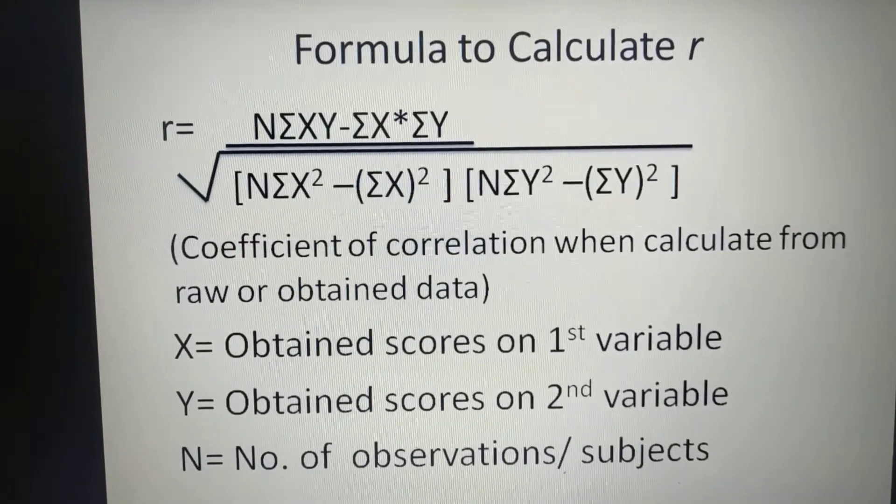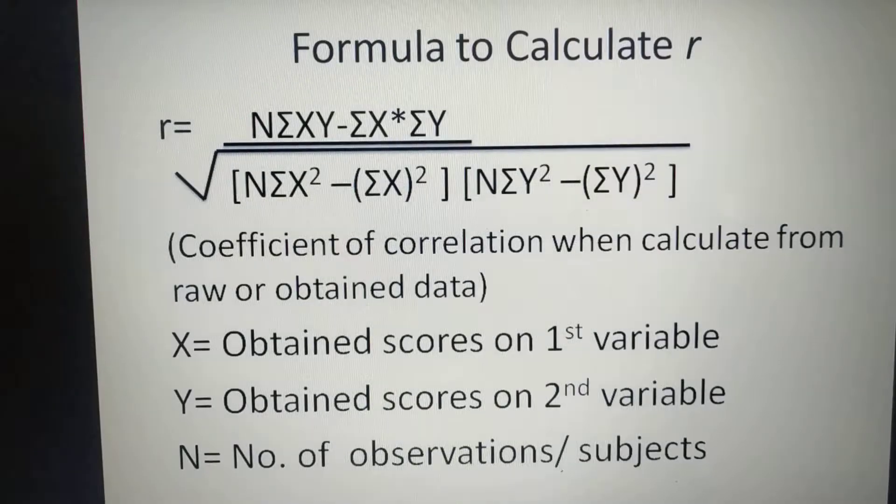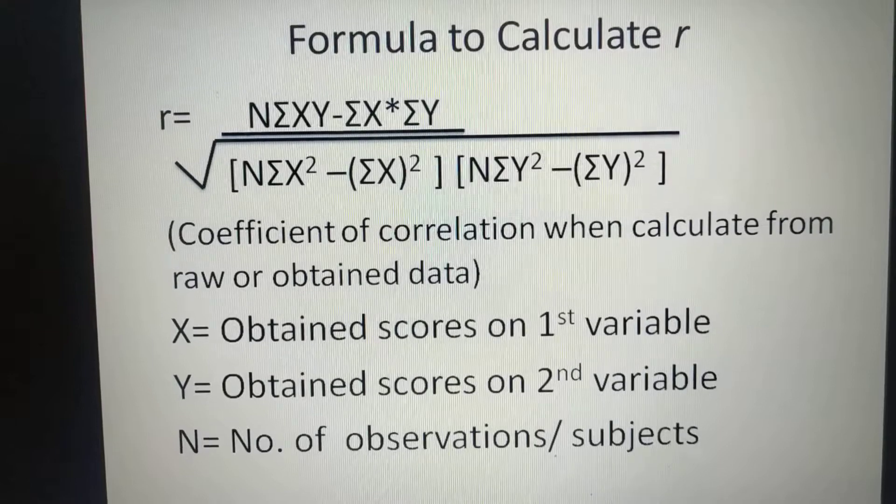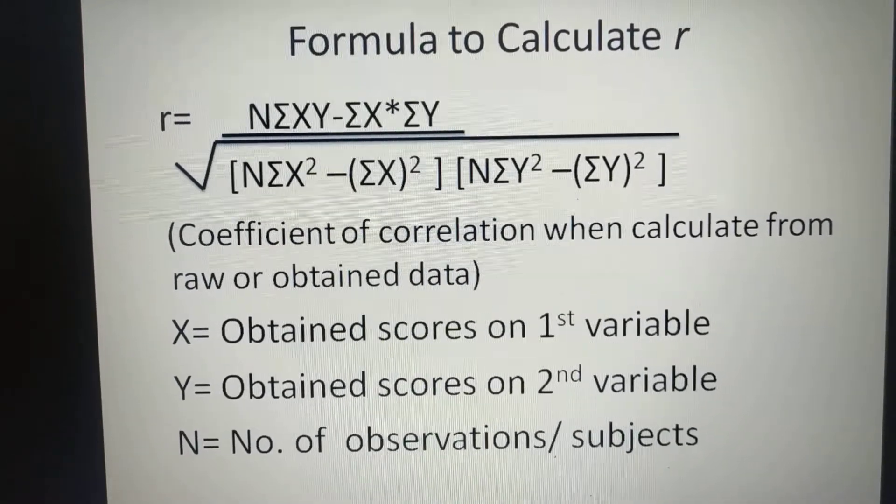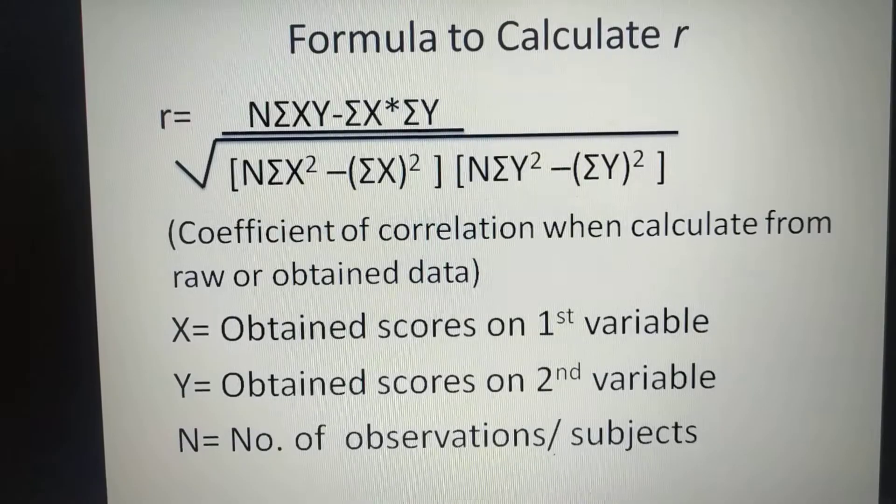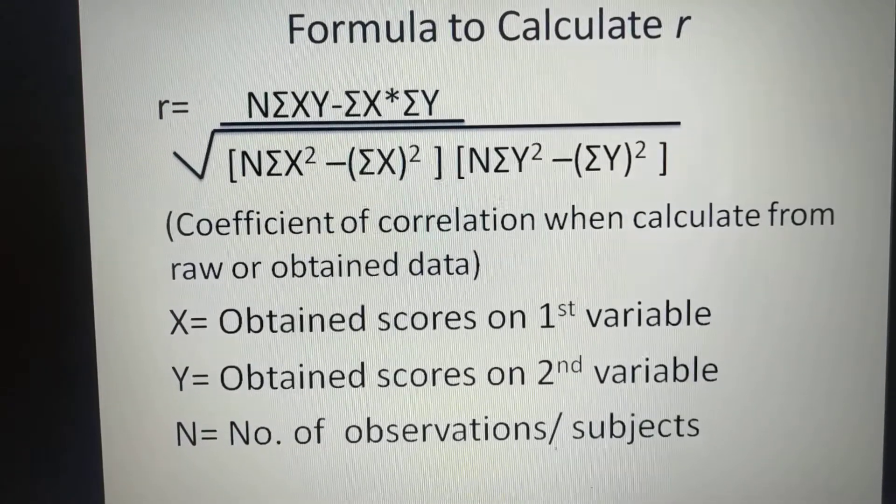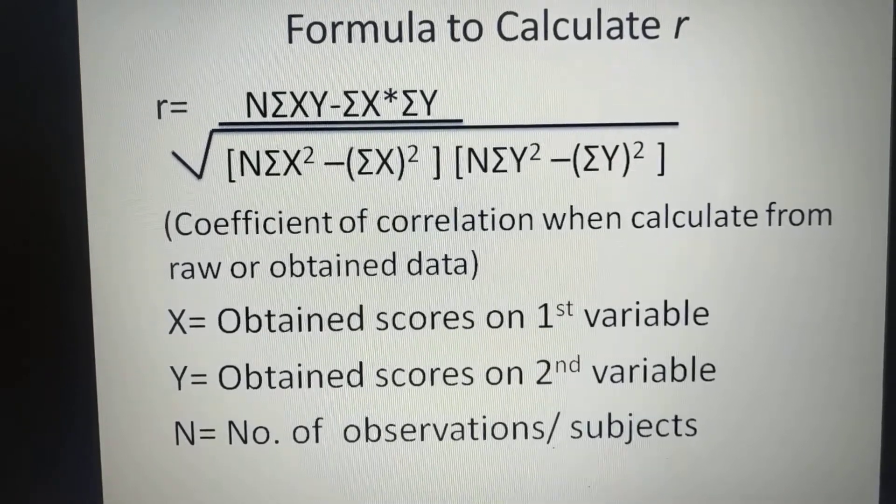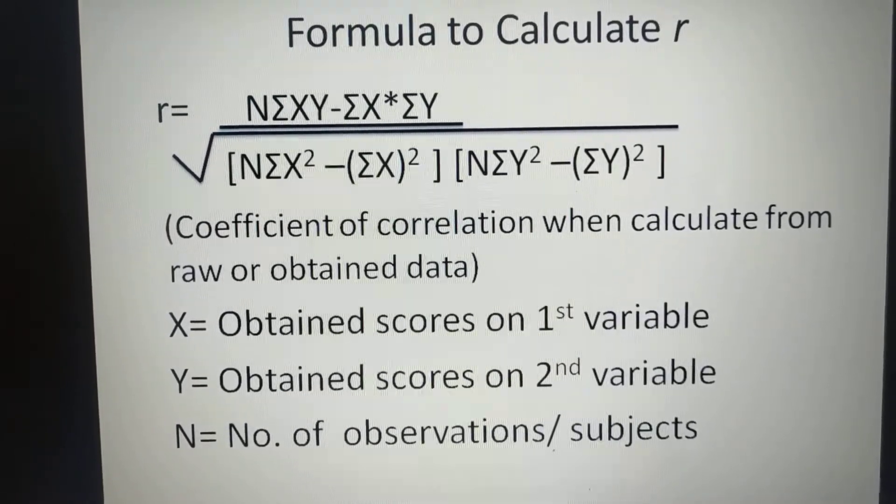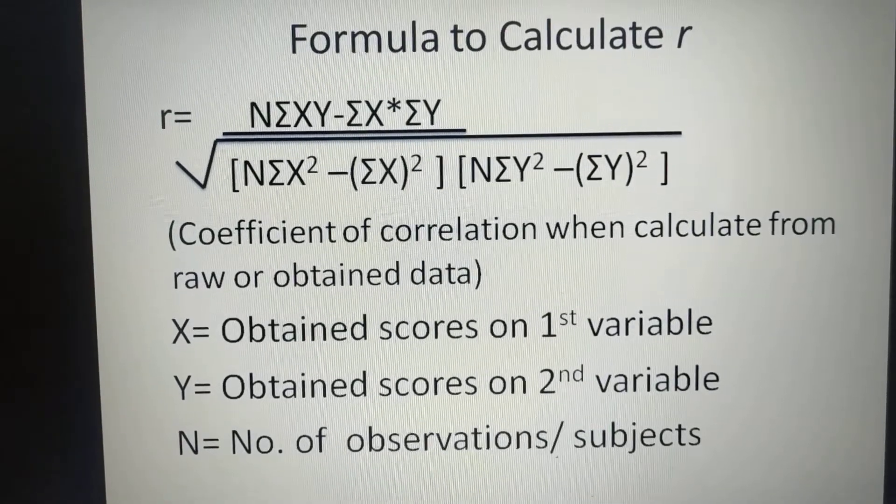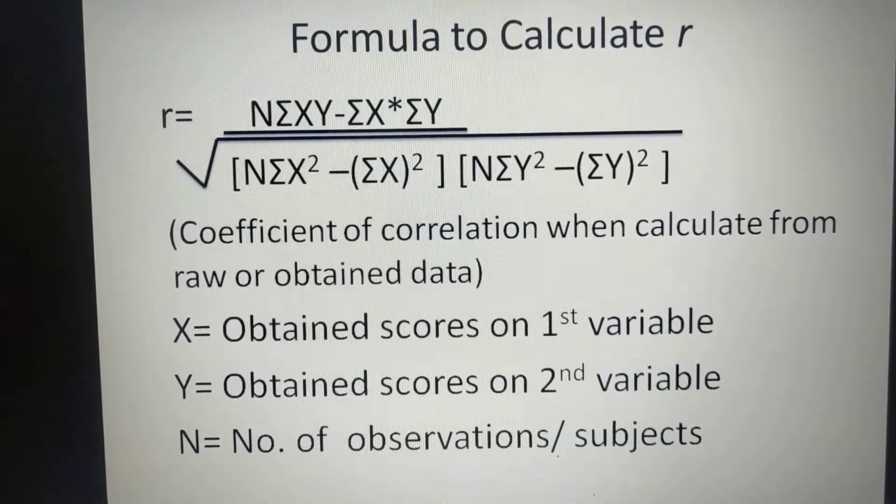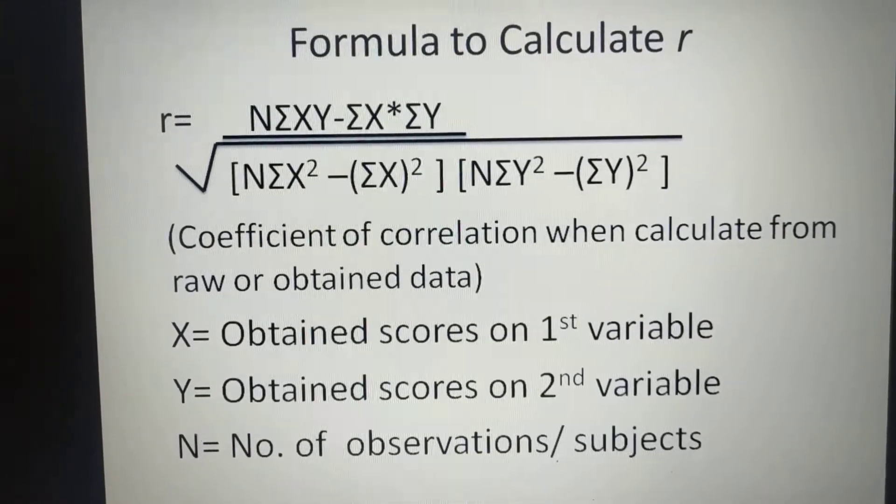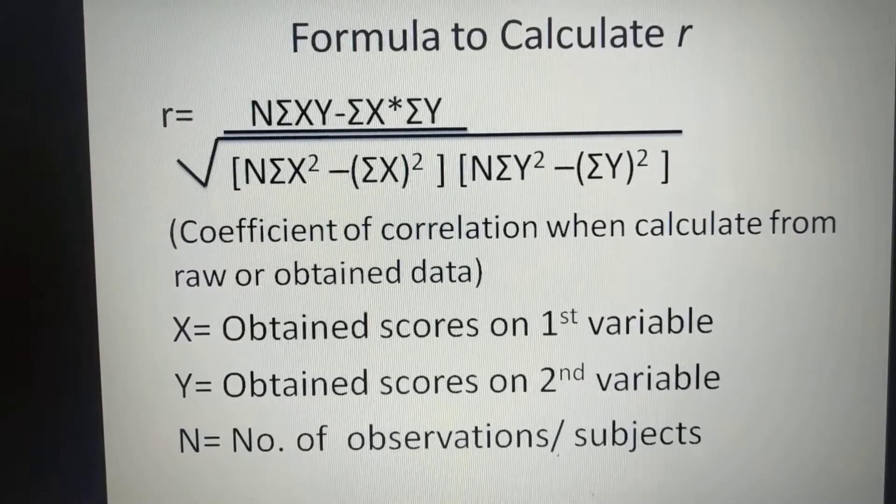So the present formula is used when correlation calculate from raw or obtained score. Formula is R equals to capital N submission XY minus submission X multiplied submission Y upon square root in first bracket N multiplied submission X square minus submission X whole square bracket close.